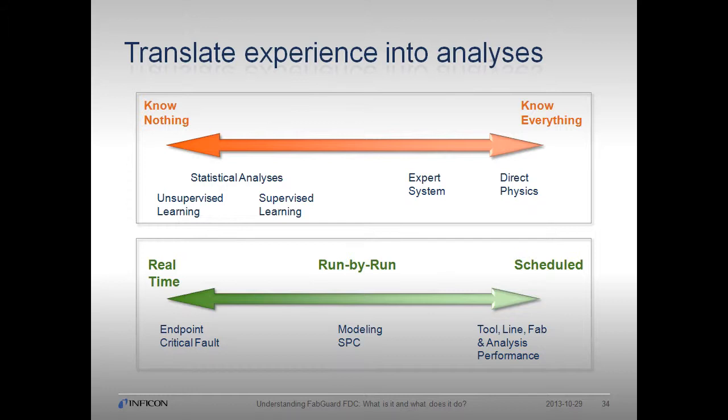When you know nothing about the internal workings of the process, statistical analyses are available — including both unsupervised learning, where you do not know if the wafer was good or bad at the end of a process, and supervised learning, where you do know. Moving forward along the continuum, most process knowledge can be captured by the expert system. There are certain conditions known to cause process issues, and we need a way to put rules in place for these conditions.